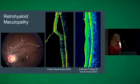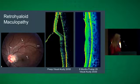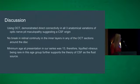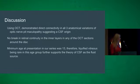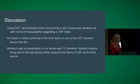We feel this is the strongest case for cerebrospinal fluid as the fluid source — a young patient with a solid posterior vitreous face and no liquefied vitreous. Using OCT, we demonstrated three different anatomical variations of optic nerve pit maculopathy and showed direct connectivity in all three, which we feel suggests a CSF origin. We also found no break in retinal continuity in the interlayers in any OCT sections around the disc, and the minimum age at presentation in our series of 13 suggests liquefied vitreous could not be the source.